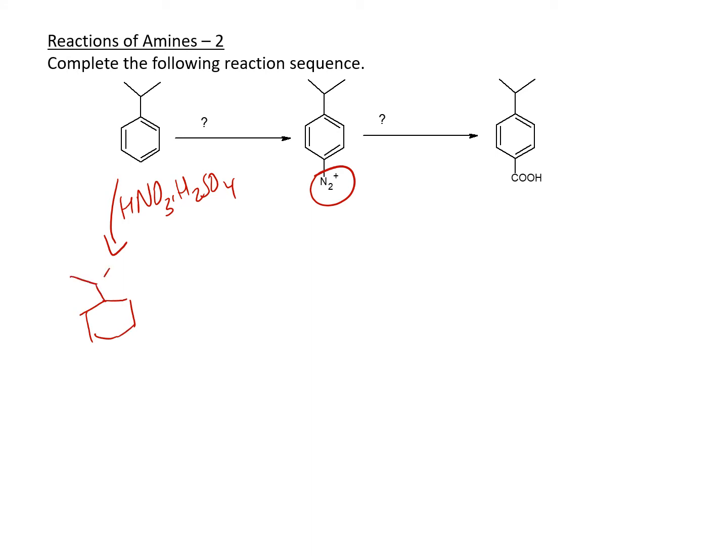Once you have the nitration, then you have to do reduction. You can use tin chloride or you can use LAH. Either one of those is fine. This one will give us NH2.